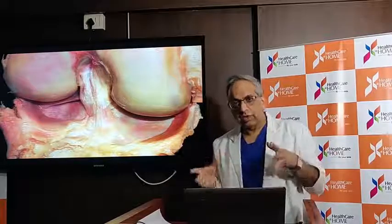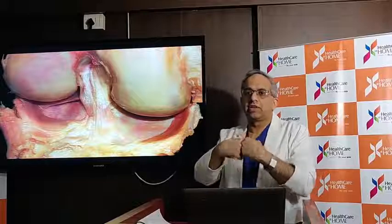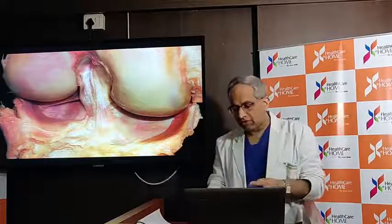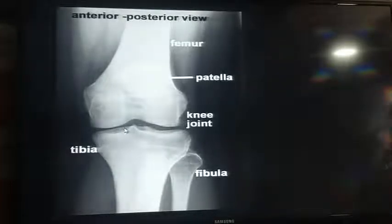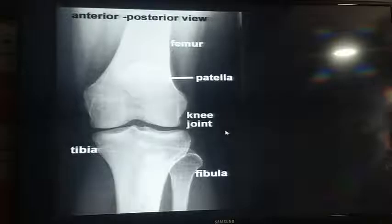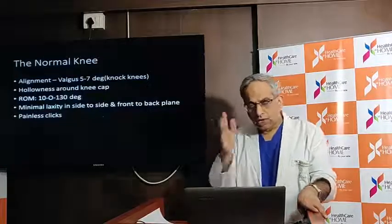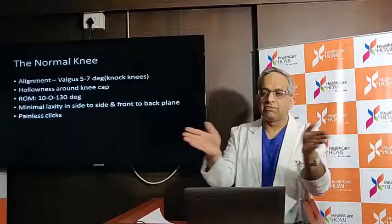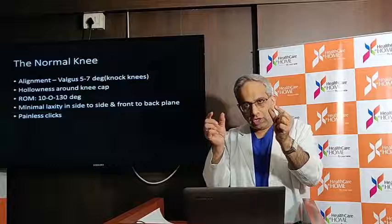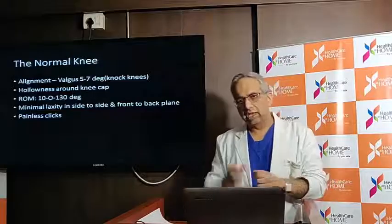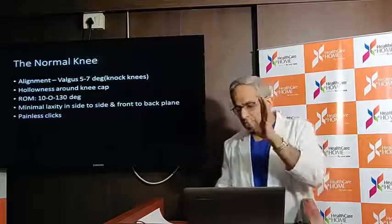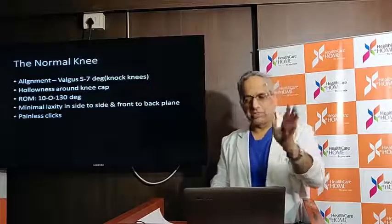All these structures together make up the knee joint. The knee is like a hinge but also has an element of rotation inside, so it's not a totally simple joint. On X-ray you can see the thigh bone and leg bone; the cartilage in between doesn't show on X-rays. Normally, some people have knock-knees, there is a little hollowness in the knee caps, the knee can bend to about 130-140 degrees, there is a little give in each knee, and sometimes a painless clicking sensation is totally normal.